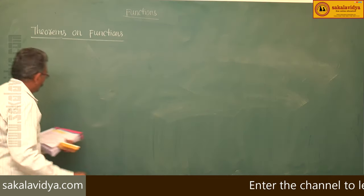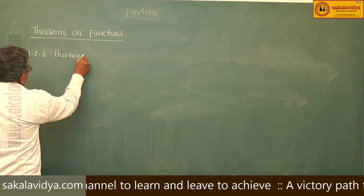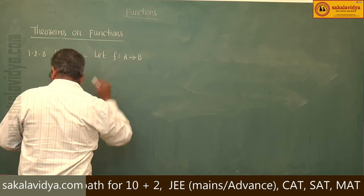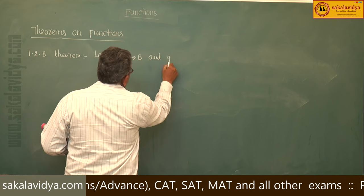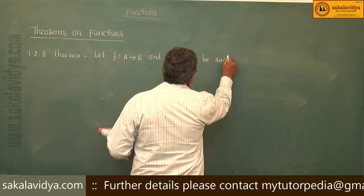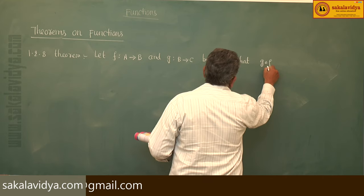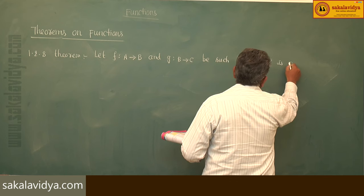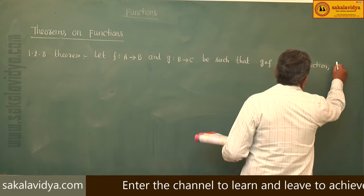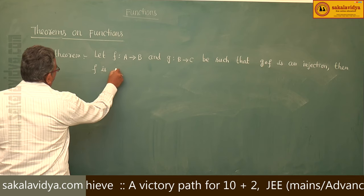Next theorem: Theorem 1.2.8. Let f map A to B and g map B to C, such that g circle f is an injection. Then f is an injection.